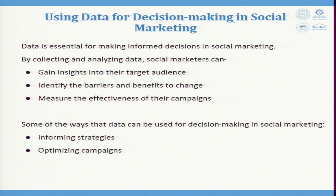Data is essential for making informed decisions in social marketing. By collecting and analyzing data, social marketers can gain insight into the target audience, identify barriers and benefits to change, and measure the effectiveness of campaigns. Some of the ways data can be used for decision making in social marketing include informing strategies.